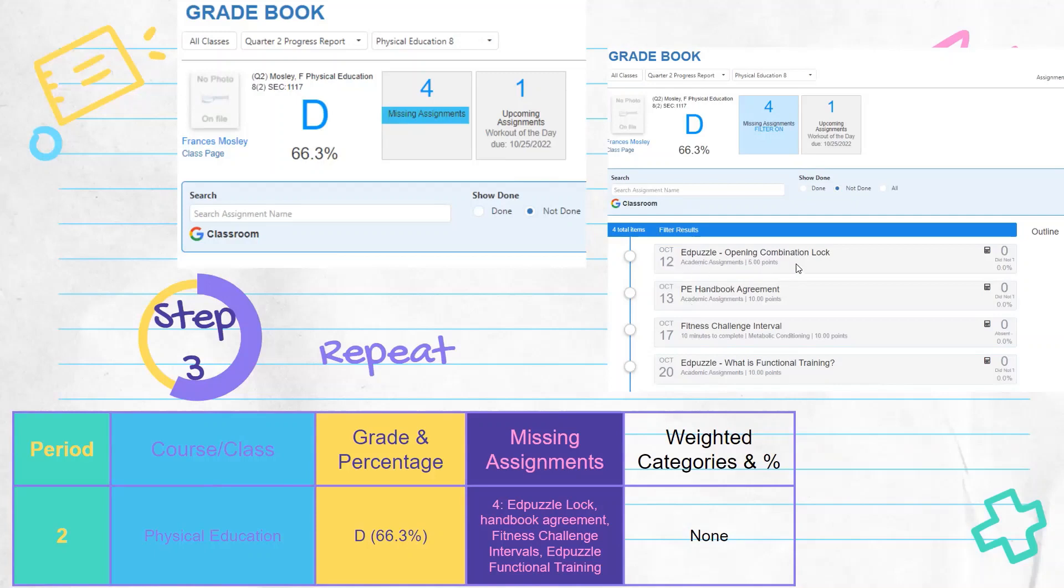So this student is missing the Ed Puzzle, the Handbook Agreement, Fitness Challenge, and another Ed Puzzle. So if you are missing any assignments, you'll go ahead and type or write that on the missing assignments area so you know what's missing. Always a great idea to go back to that email portion and email your teachers. Is it too late if you don't know the late policy to turn in these missing assignments to get your grade up? And for PE, there's no weighting. No weighted categories. So we will type none there.